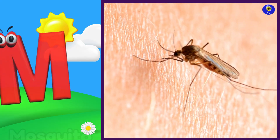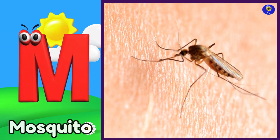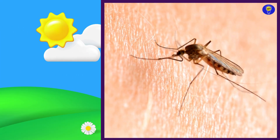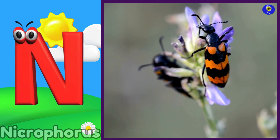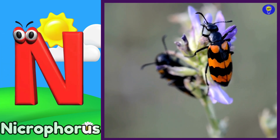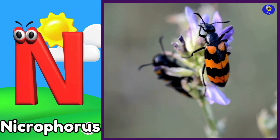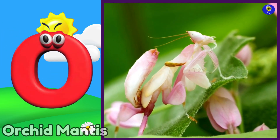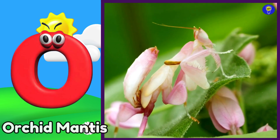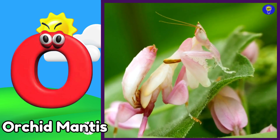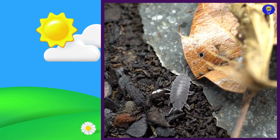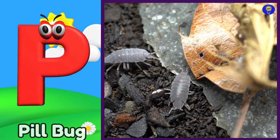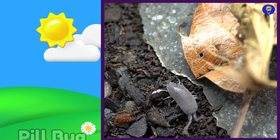M is for mosquito. M, m, mosquito. N is for Nicrophorus. N, n, Nicrophorus. O is for orchid mantis. O, o, orchid mantis. P is for pill bug. P, p, pill bug.